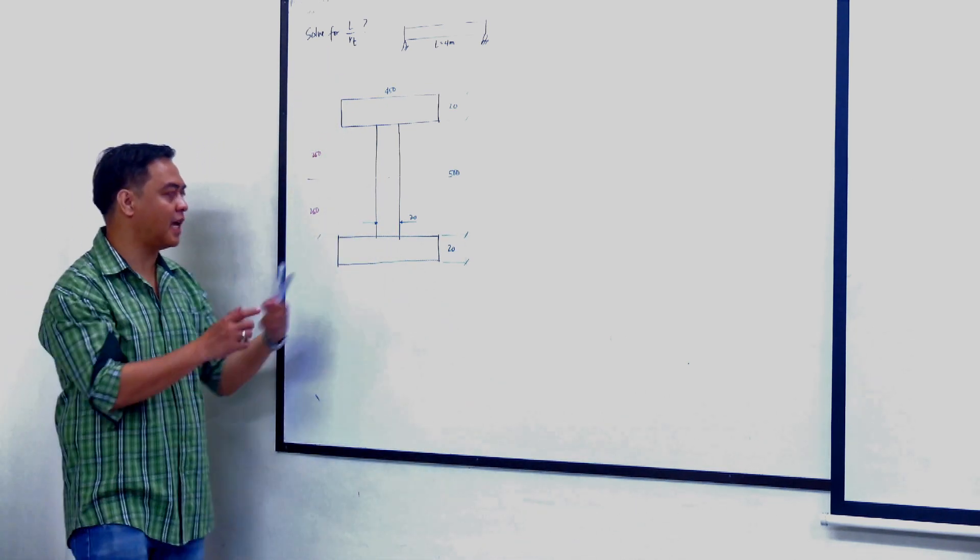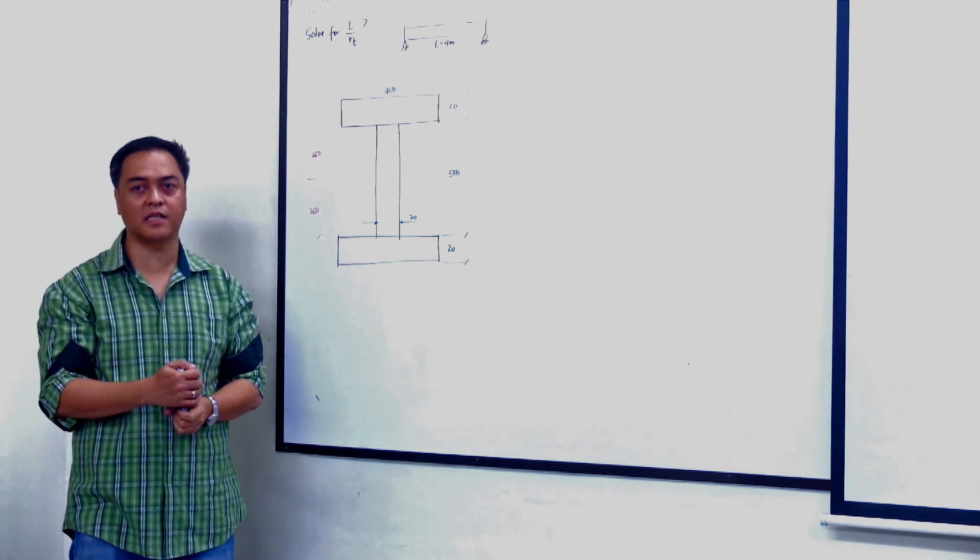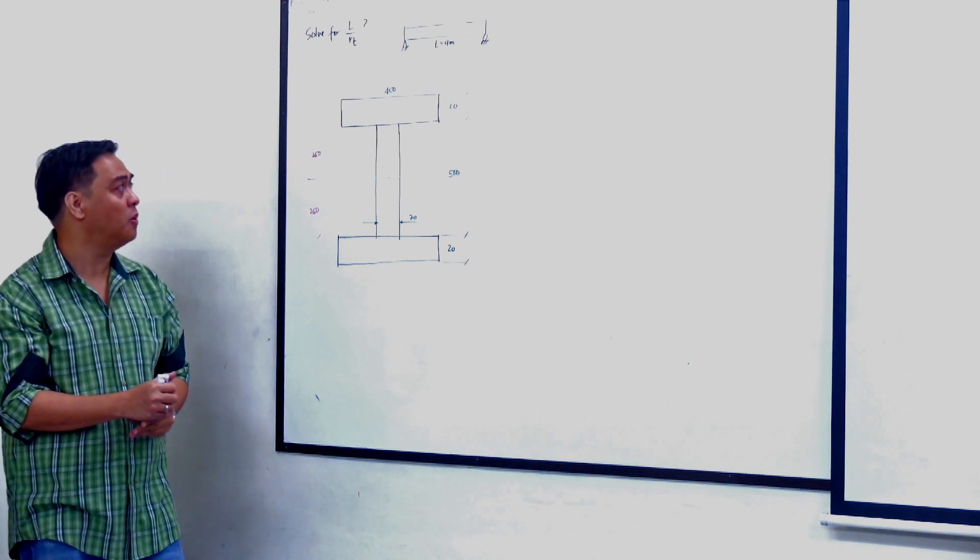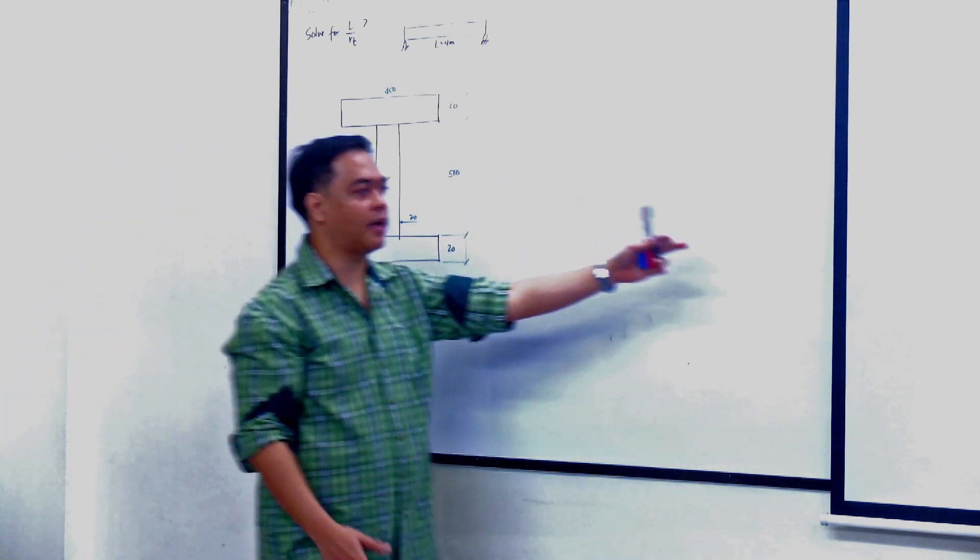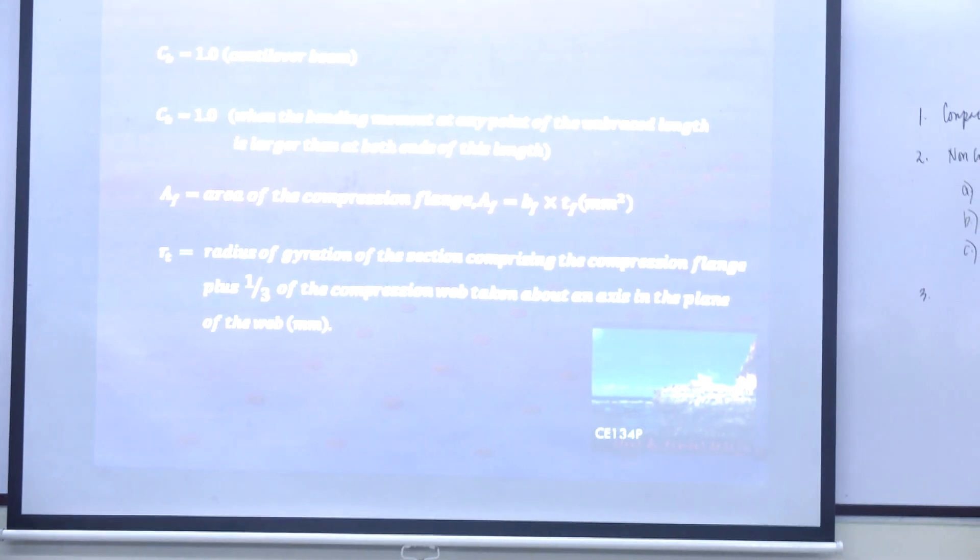Unfortunately for this case, it is a built-up section. We don't have the R sub D property in the steel manual, so we will be obliged to solve for it. Let's look at the definition of R sub D from the code.